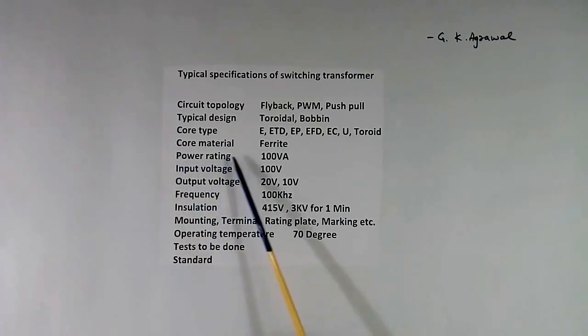Then power rating, we have to write. I have written 100 VA. It can be anything what you want. Then we have to write input voltage. We have to write output voltage. This is applicable for turn ratio and flux design also.